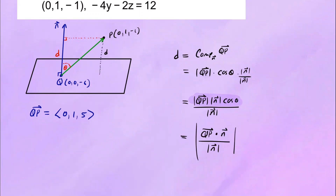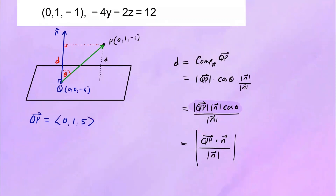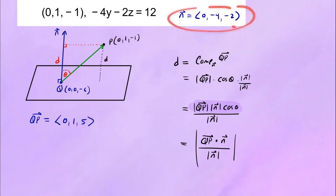Working this out is very easy. We know the vector QP — that's (0, 1, 5) — and we're going to plug that in. Now N is the normal vector of this plane. The normal vector has components x=0, y=-4, and z=-2. That's our normal vector, and we'll plug that in, take the dot product, and divide by its magnitude.